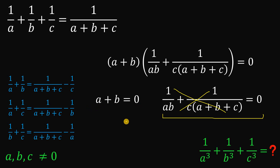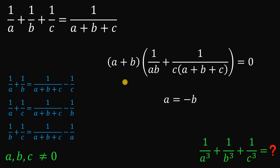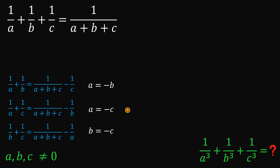So let's focus on A plus B equals 0, which means A equals negative B. Doing the same process: in the second case, A equals negative C; and in the third case, B equals negative C. Using this information, we can now evaluate our expression: 1 over A cubed plus 1 over B cubed plus 1 over C cubed.